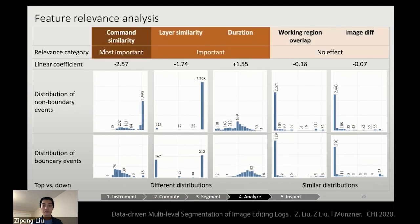So we can see that the first three columns have different distributions, but the last two features have similar distributions. Based on the above evidence, we conclude that we can categorize these five features into three bins: most important, important, and no effect.